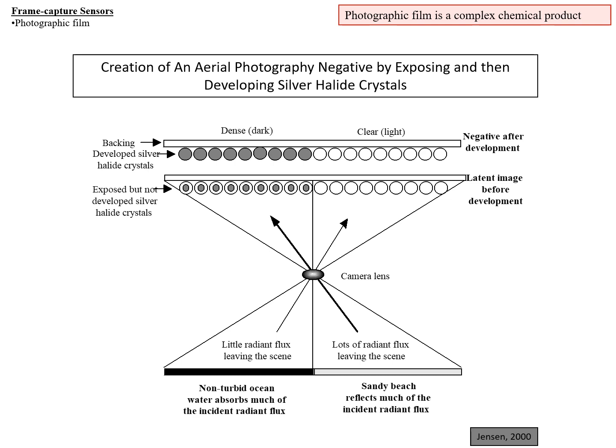Here we have a figure showing how film is exposed for a simple case. At the bottom, you'll see a non-turbid ocean where most of the incident radiation is absorbed, and a sandy beach adjacent to it that reflects most of the incident radiation. You have incident light, and then little radiant flux leaving the scene for the non-turbid ocean, and lots of radiant flux leaving the scene for the sandy beach that passes through the lens.